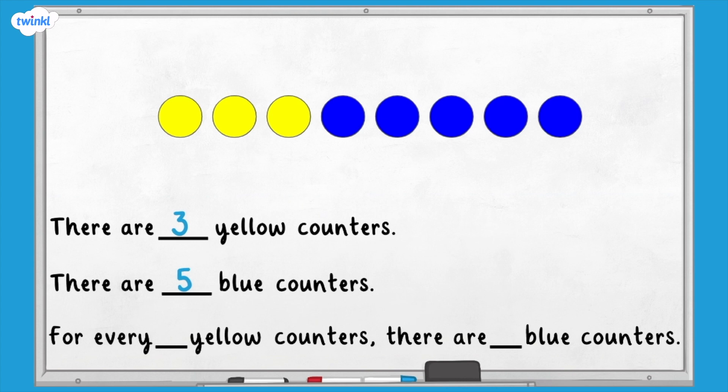What is the relationship between the yellow and the blue counters? We use the language 'for every' when we are describing ratio. For every three yellow counters, there are five blue counters.